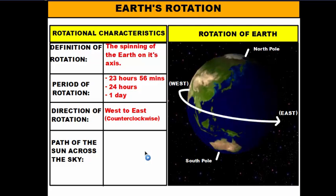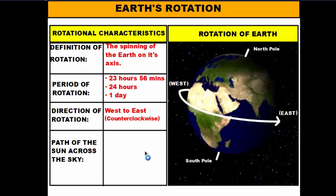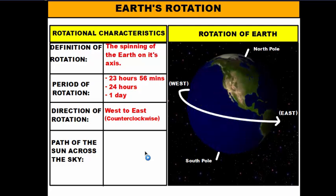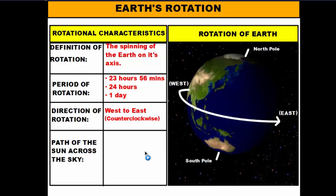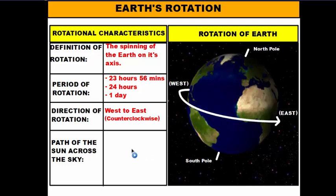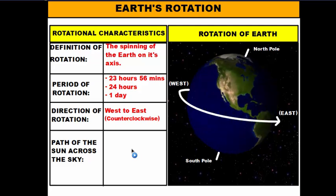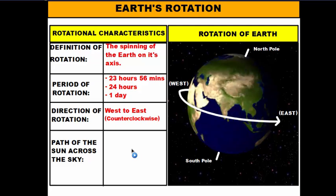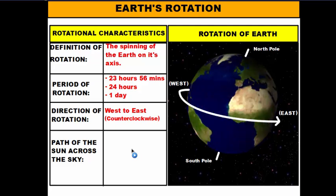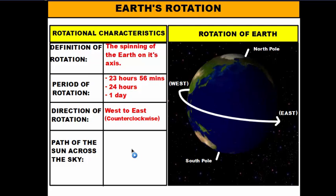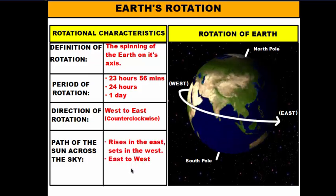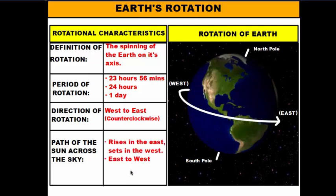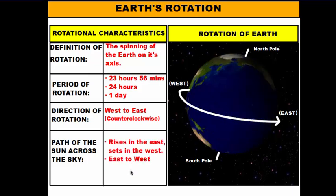The rotation of the Earth affects the path of the Sun across the sky, which in turn affects where the Sun rises and sets. Because of this counter-clockwise, west-to-east rotation, our Sun always rises in the east and sets in the west.